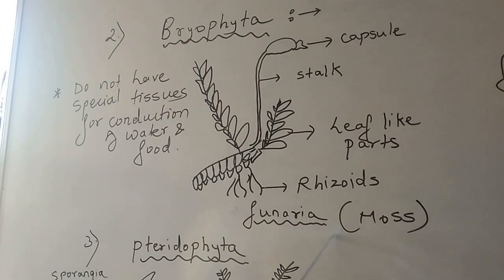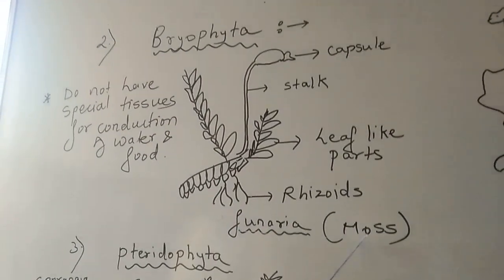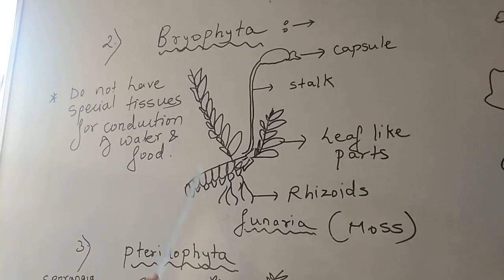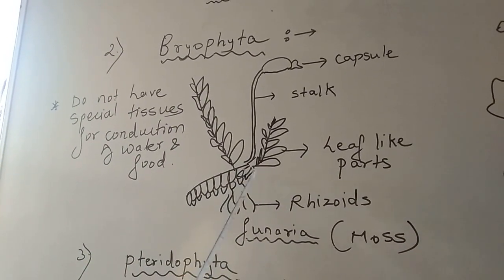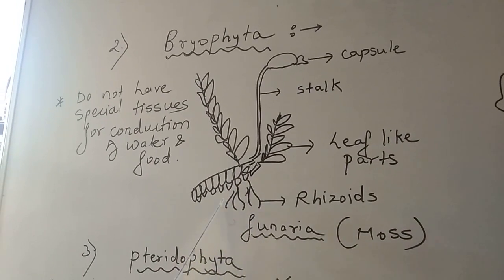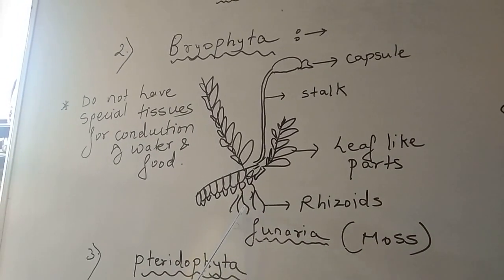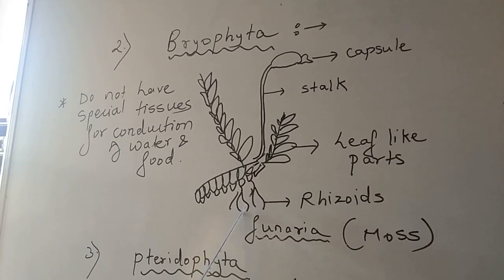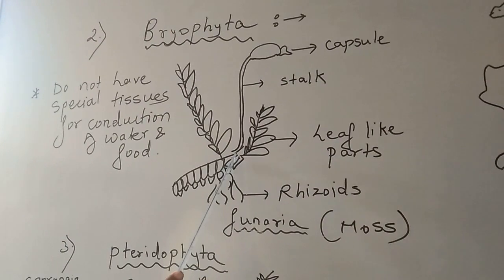Let's begin in detail by taking an example of moss. Moss is also called as Funaria. If you observe this picture or diagram, you can see that there are root-like structures. This is not a true root — it looks like a root, but it is called as rhizoids.